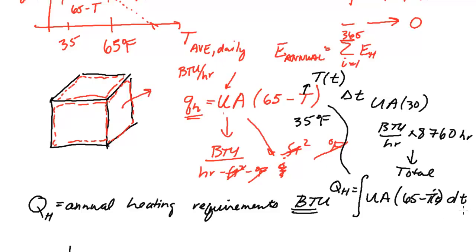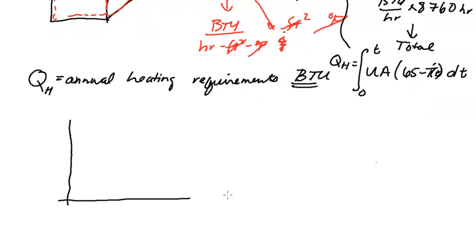So at any moment, we have this level of heat transfer going out. If we multiply it by some small difference in time, and we do this from 0 to T, from the first of the year to the last of the year, we'll get the total energy requirement.